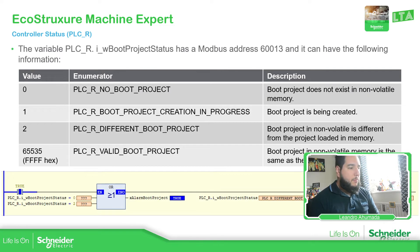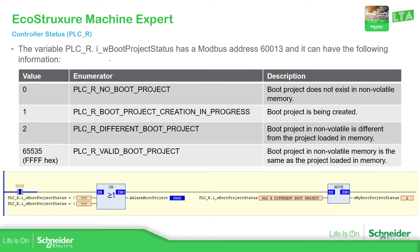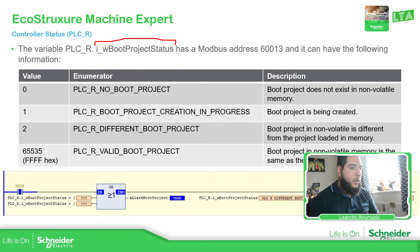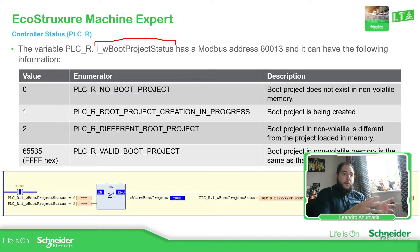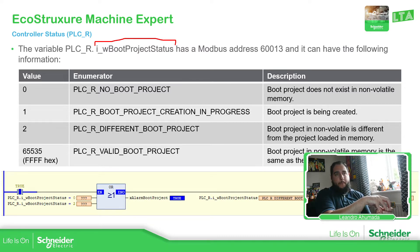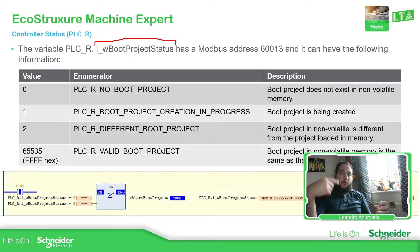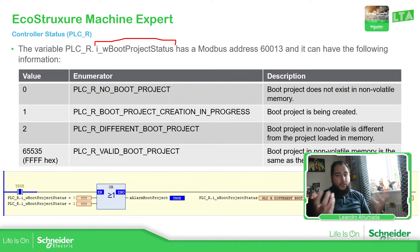Another variable that we have is the status of the boot project. So basically the boot — how to explain this part. In the controller, we have a volatile and non-volatile area. In the non-volatile area, our boot project is going to be stored. So when the PLC boots up, it moves or copies the boot project to the volatile area. The volatile area is the one that runs the program. So if we don't have this boot project, the PLC doesn't have anything to run — there is no program.